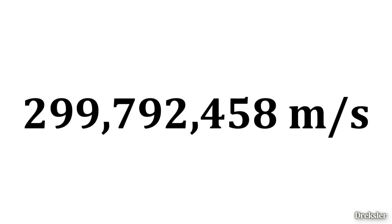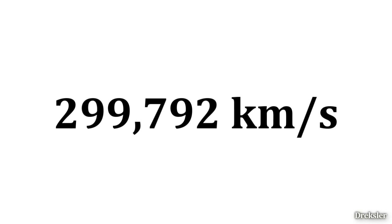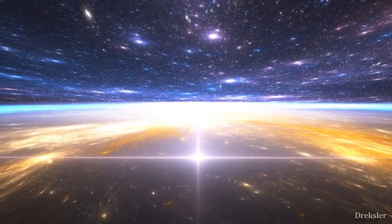The speed of light is over 299 million meters per second, or over 299 thousand kilometers per second. Speed of light is the fastest achievable speed in the universe.